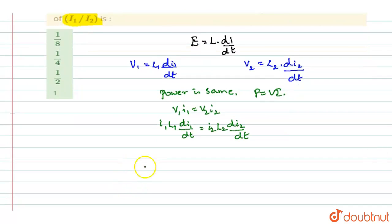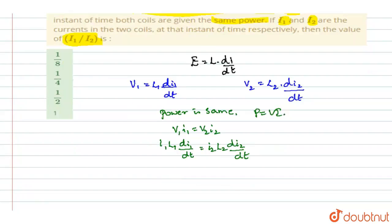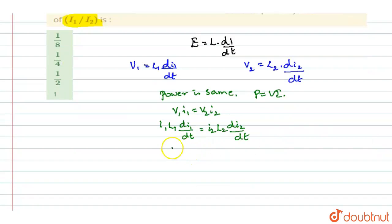L1 and L2 are given. L1 is 4 mH and L2 is 1 mH. So this becomes 4 I1 into di1 by dt equals I2 into di2 by dt.